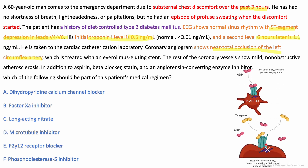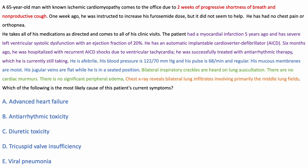The correct answer is the P2Y12 receptor blocker. By blocking this receptor and blocking COX-1, we are inhibiting platelet aggregation in two ways, so that a thrombus does not form on top of the stent.